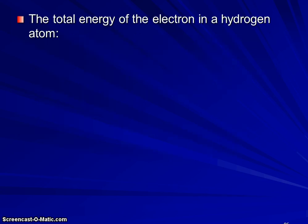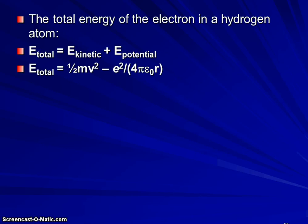The total energy of the electron in a hydrogen atom or total energy of anything is going to be its kinetic energy plus its potential energy. So the total energy of the electron is going to be related to its speed and its mass and its attraction to the nucleus. Again, the electrostatic terms.